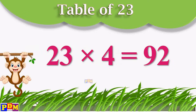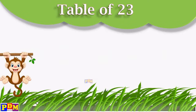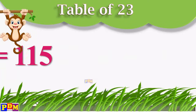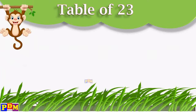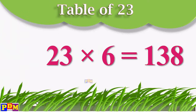23 fours are 92. 23 fives are 115. 23 sixes are 138.